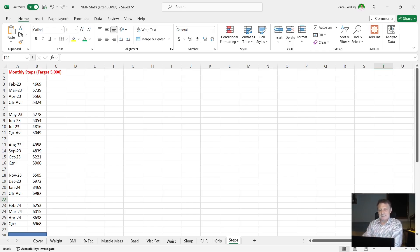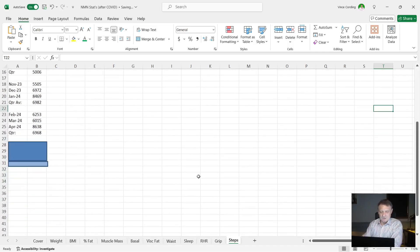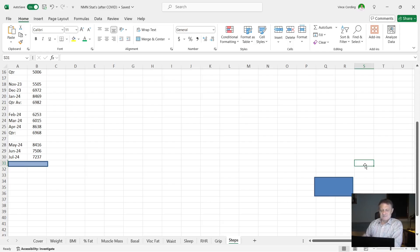So for the last quarter, you can see here that my step count for May was 8,416. June, 7,506. And July, 7,237. So all above the 5,000 I wanted. The average for the quarter, 7,719. So that's well above the 5,000. So I'm very happy with that. That's it for my objective stats.